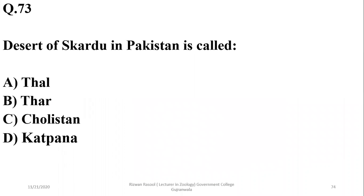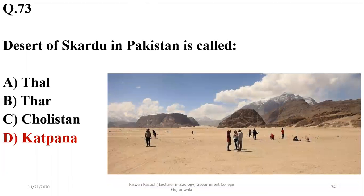The desert of Skardu in Pakistan is called Katpana. Thal desert is found in Punjab, in the Mea Valley in Bakkar. Cholistan is also found in Punjab. But Katpana is the cold desert of Pakistan, found in Skardu, Gilgit-Baltistan.